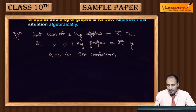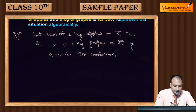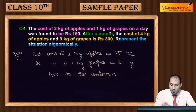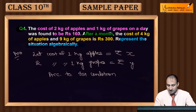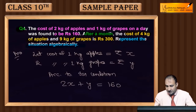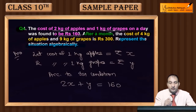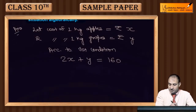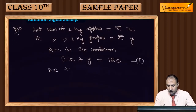According to the first condition: 2 kg apples will cost 2x, and 1 kg grapes will cost y, and the total is 160 rupees. So the first equation is: 2x + y = 160.